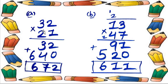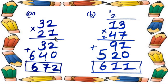32 multiplied by 21. We do this one step at a time. Step 1: 1 multiplied by 2 is 2, and 1 multiplied by 3 is 3 — any number multiplied by 1 gives that same number. So step 1 gives us 32.